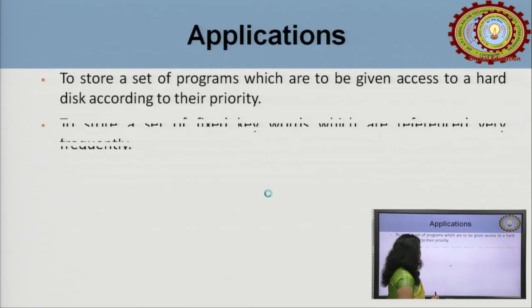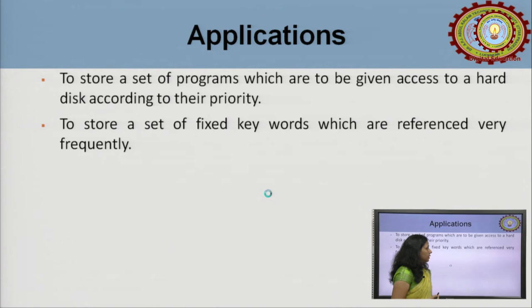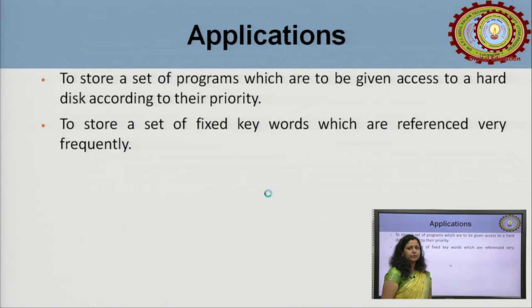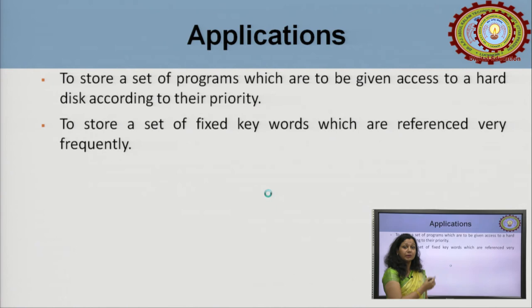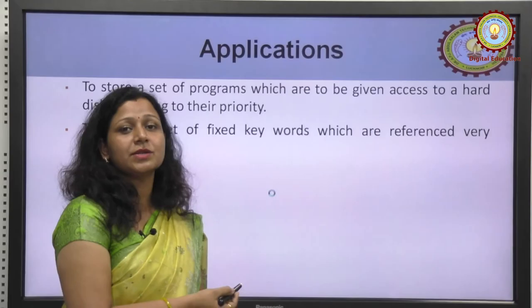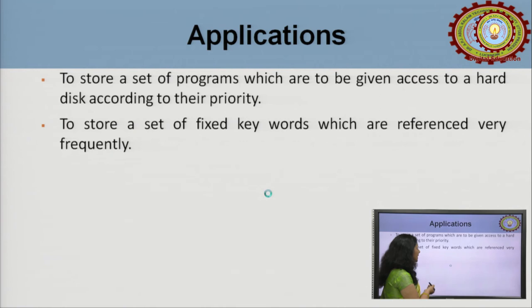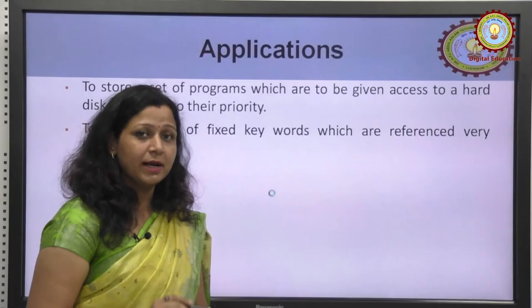So this is all about the basic data structures. Now their applications: to store a set of programs to be given access to a hard disk according to their priority — when multiple programs need to be processed, they are stored on the hard disk and then come to the CPU for processing. Organizing them priority-wise on the hard disk is an application of data structures.